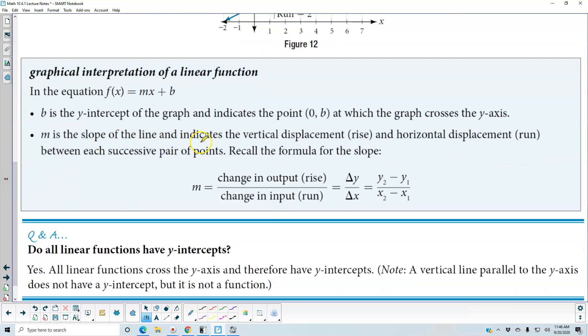m is the slope of the line and indicates the vertical displacement, meaning the rise, and the horizontal displacement, the run, between each successive pair of points. Recall the formula for the slope.